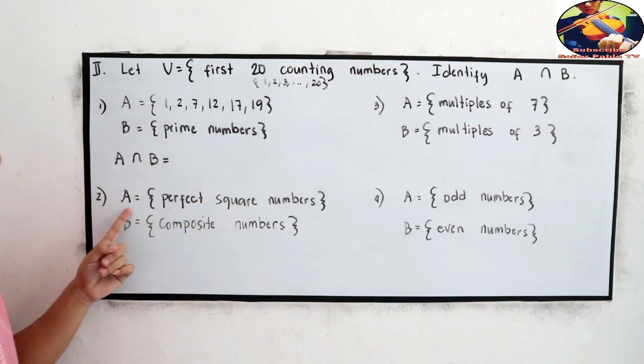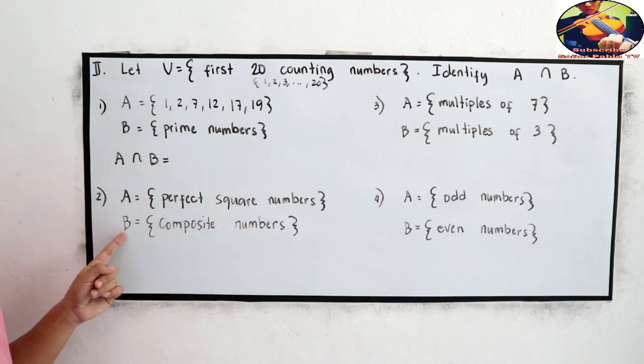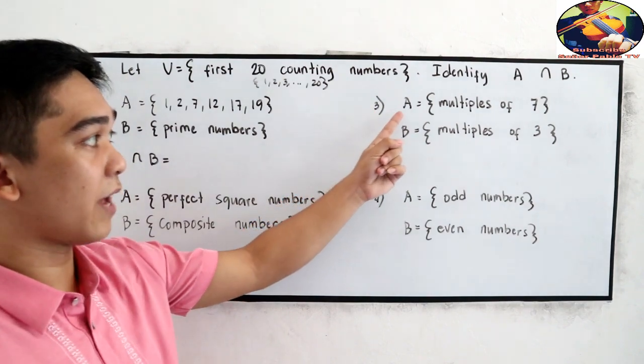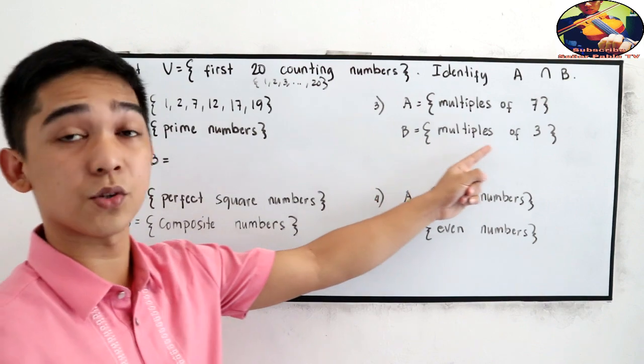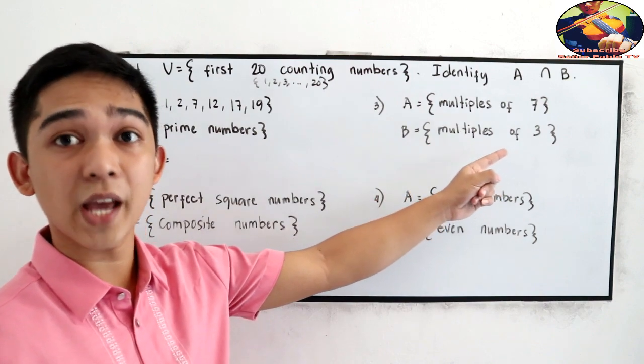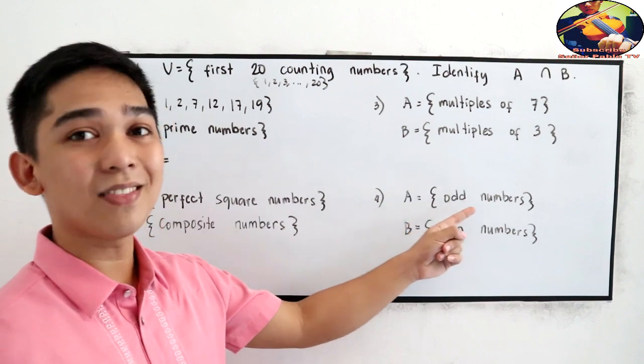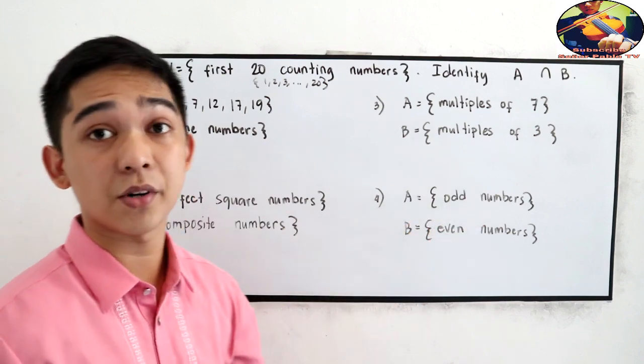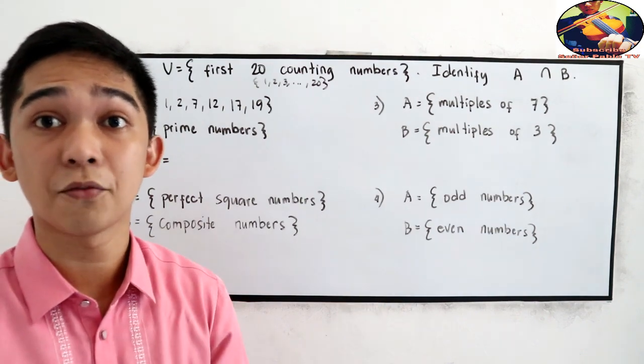Set A for number 2, perfect square numbers. Set B, composite numbers. Number 3, set A is multiples of 7. Set B, multiples of 3. Find the intersection. Number 4, set A is equal to odd numbers. And set B, even numbers. So, you can pause the video so you have time to answer numbers 1, 2, 3, and 4.